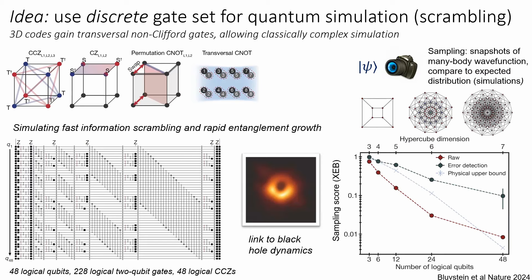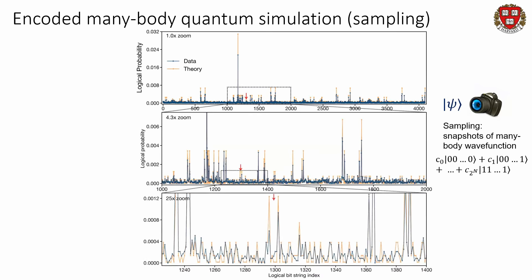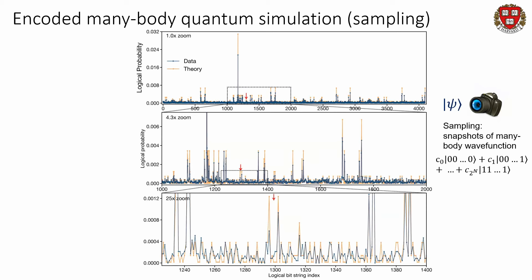If you zoom in on those tiny features — these two tiny features that as you zoom in further become two big features — you can see that even down at the noise floor of all the different coefficients in the wave function, you still reproduce the shape very well. You're able to reproduce the tiny wiggles in the theoretical distribution. This points to something remarkable about doing experiments with error-correcting qubits: they're very different than physical qubits. What you're doing here is taking discrete, error-corrected building blocks and building precise but complex many-body entanglement, targeting specific states in Hilbert space in a precise fashion.